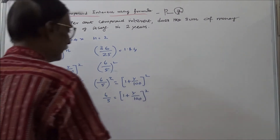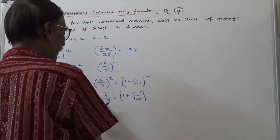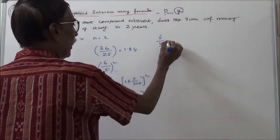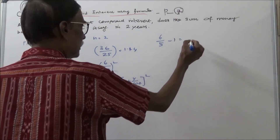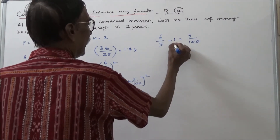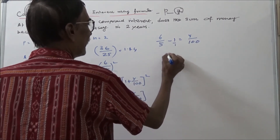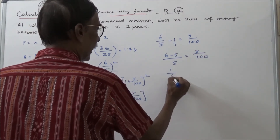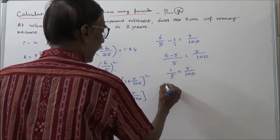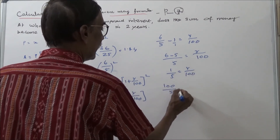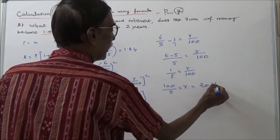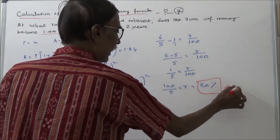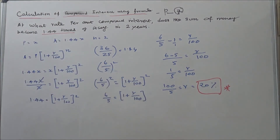So 6 by 5 is equal to 1 plus R by 100. Therefore, R by 100 is equal to 6 by 5 minus 1, which gives 1 by 5. So R by 100 equals 1 by 5, meaning R is equal to 100 by 5, which is 20. The rate of compound interest is 20 percent.